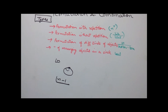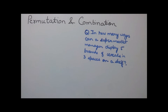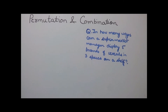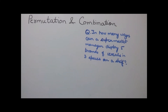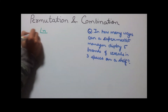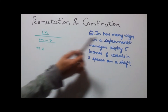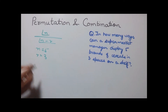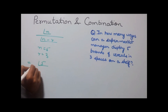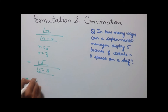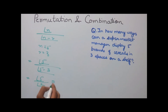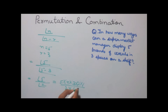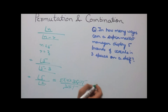Example 1: In how many ways can a supermarket manager display 5 brands of cereals in 3 spaces on a shelf? This is clearly permutation without repetition, so using the formula factorial n divided by factorial (n minus r), where n = 5 (total brands) and r = 3 (spaces). Putting in values: factorial 5 divided by factorial (5 − 3) = factorial 5 divided by factorial 2 = (5 × 4 × 3 × 2 × 1) divided by (2 × 1). Cancelling gives 5 × 4 × 3 = 60 as the answer.